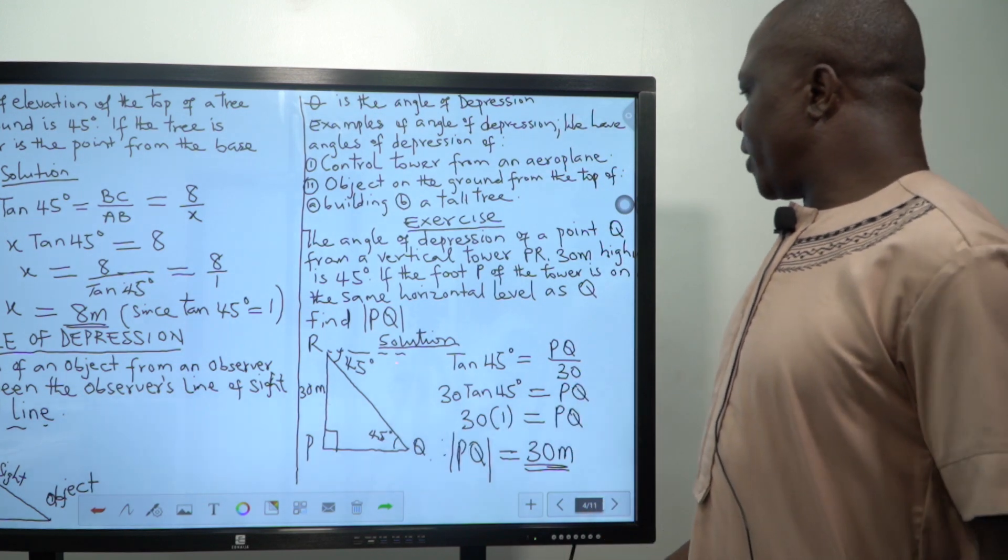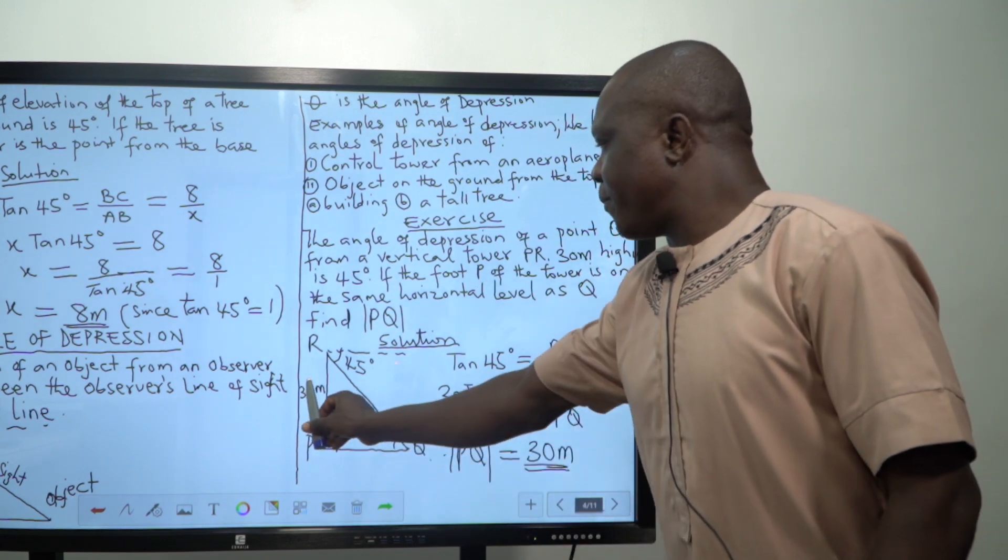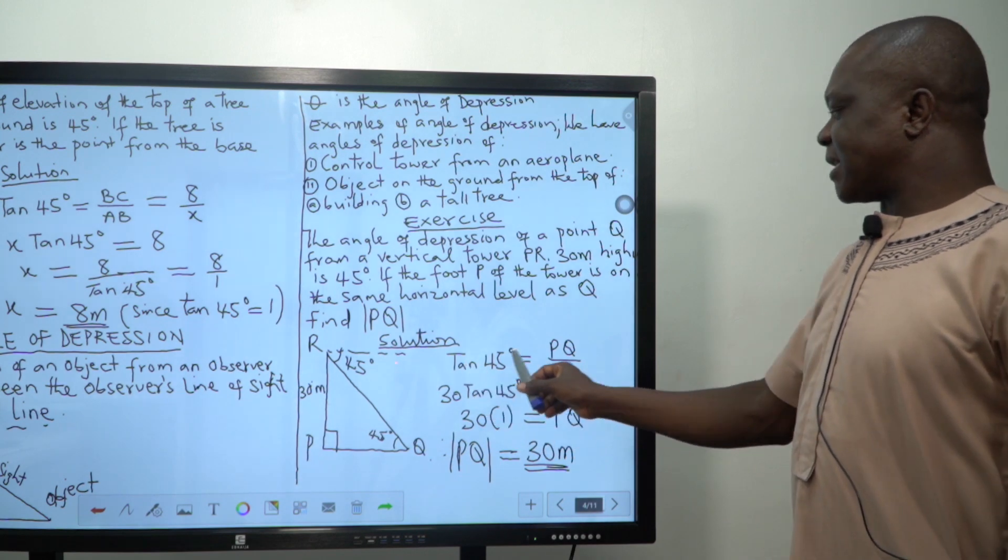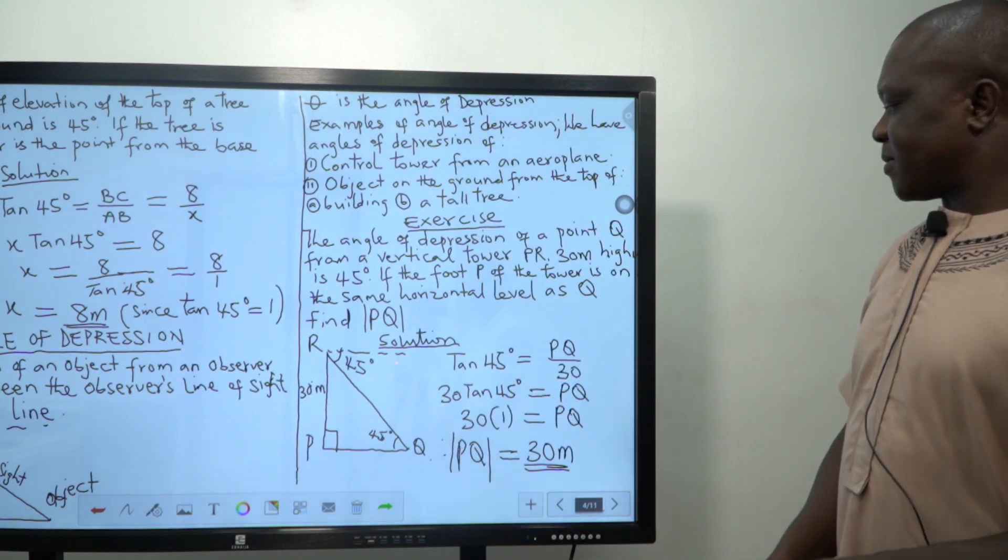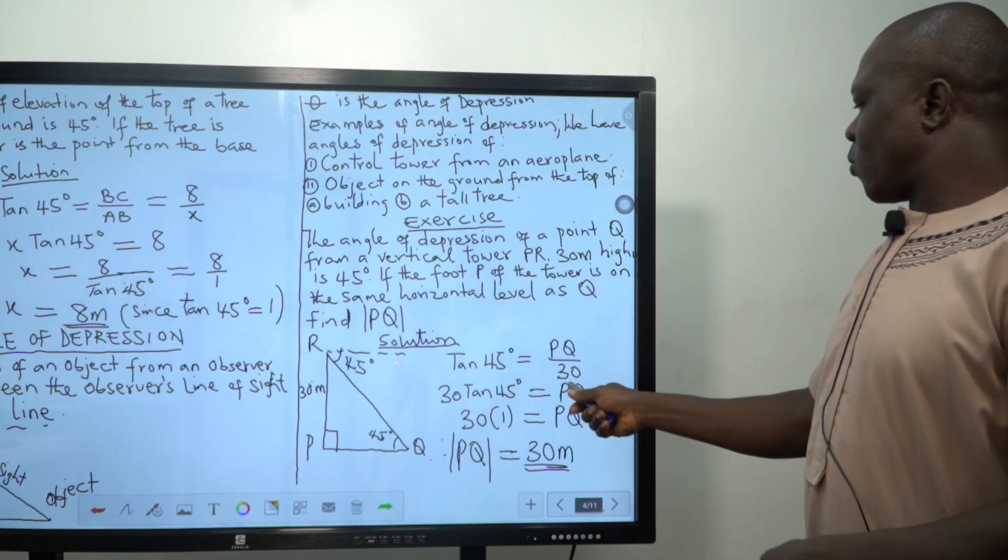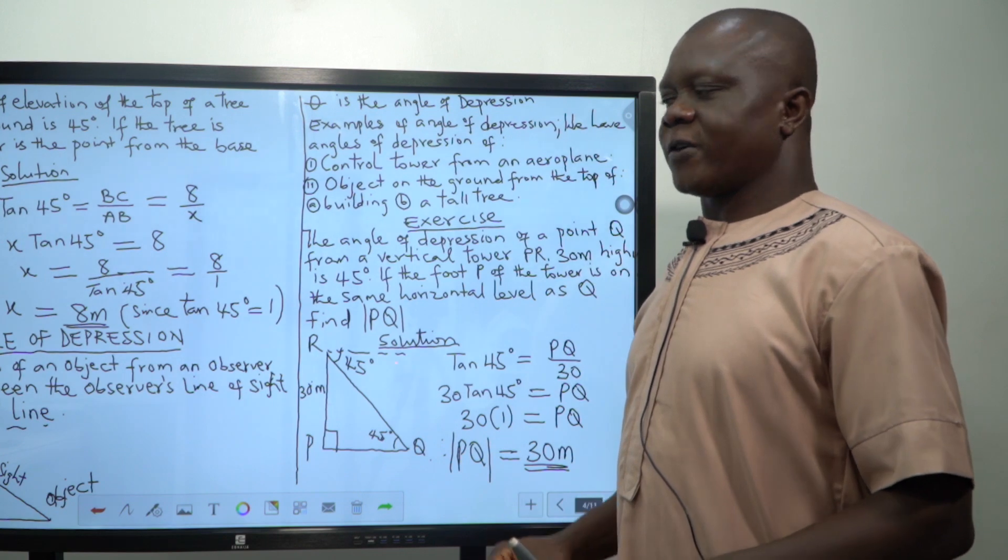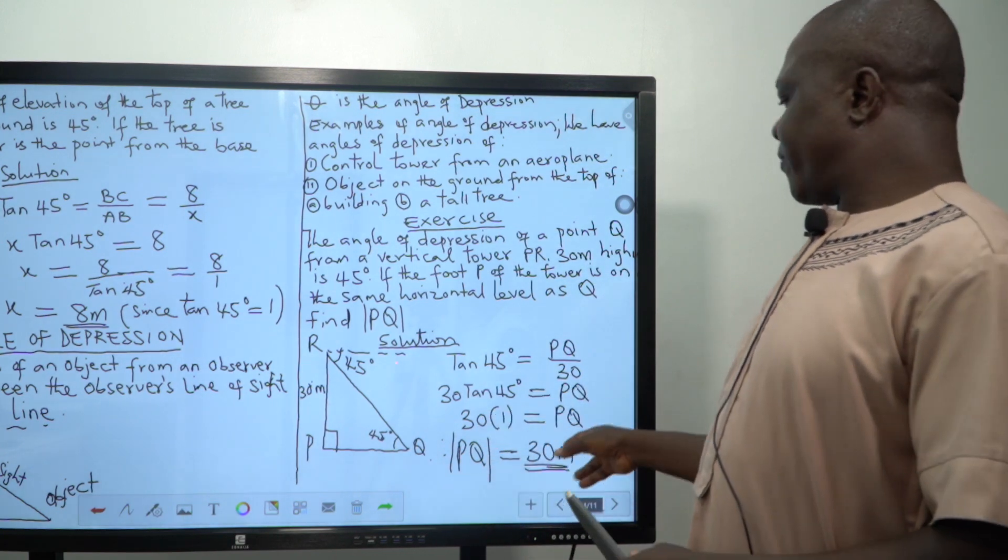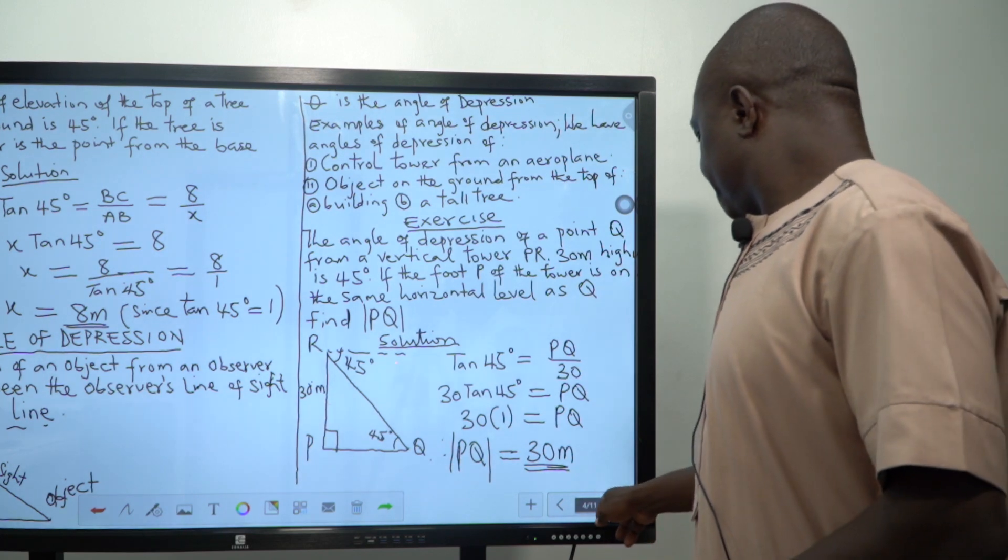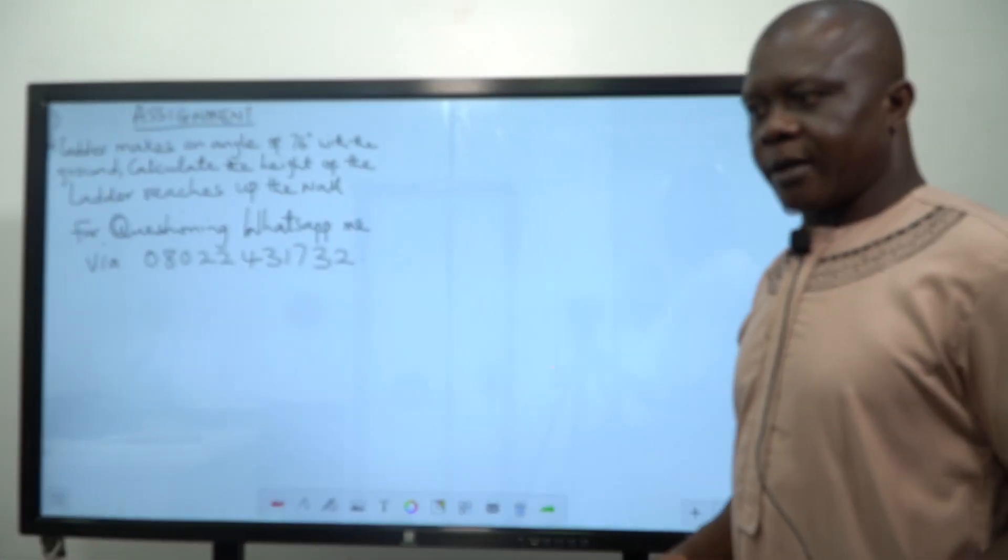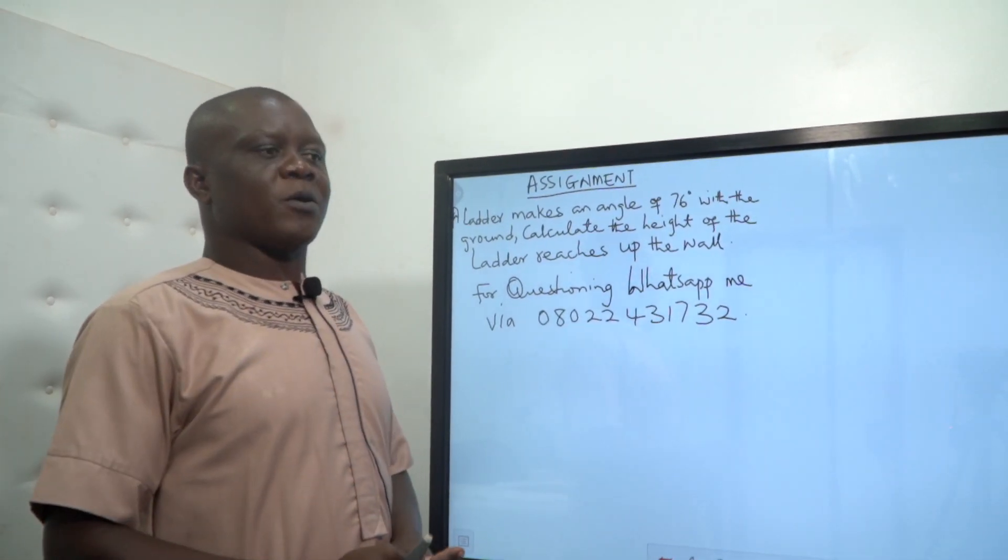Why I have this angle 45 is because this angle of depression here is alternate to this angle Q. So we say where we are looking for now is PQ, which is the foot or the horizontal line. We have opposite over adjacent. That's why I have tan 45 equals to PQ over 30. If you cross multiply, you have 30 times tan 45 equals to PQ. If you go to your four-figure table, you will find out that tan 45 is equal to 1. And 30 times 1 will give us 30. Therefore, line PQ equals to 30 meters.